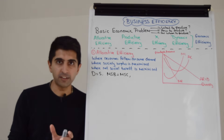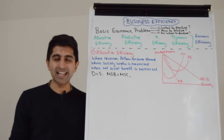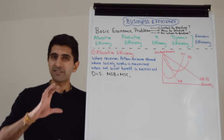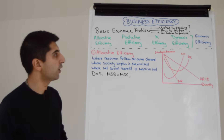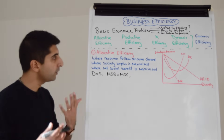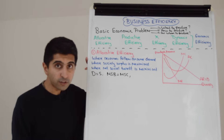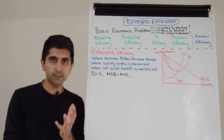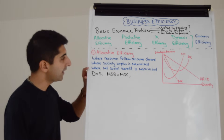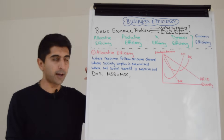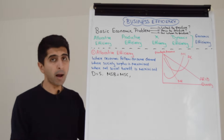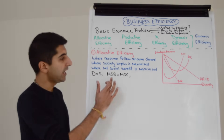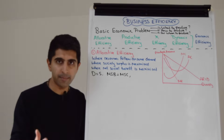Let's start with allocative efficiency. We've already studied allocative efficiency — make sure you've watched the previous video on it for a detailed understanding. In that video, we looked at it in three ways: it occurs where resources follow consumer demand, where society's surplus is maximized (that's the sum of consumer and producer surplus), and where net social benefit is maximized. In an economic market, that occurs where demand equals supply, and assuming no externalities, where MSB equals MSC.